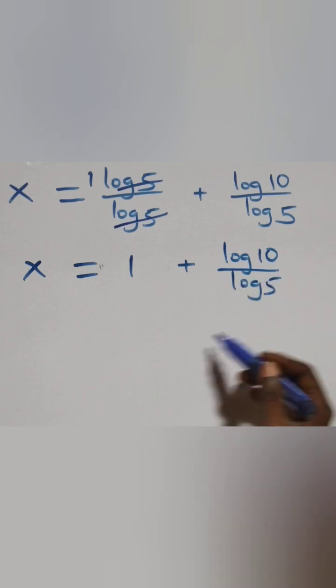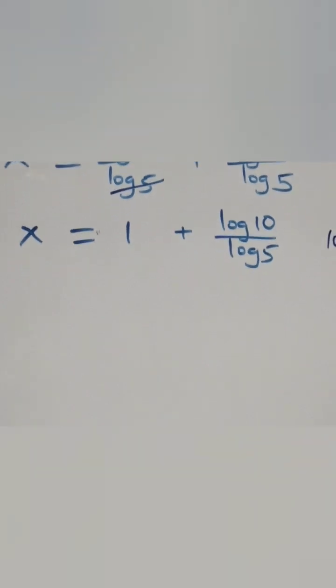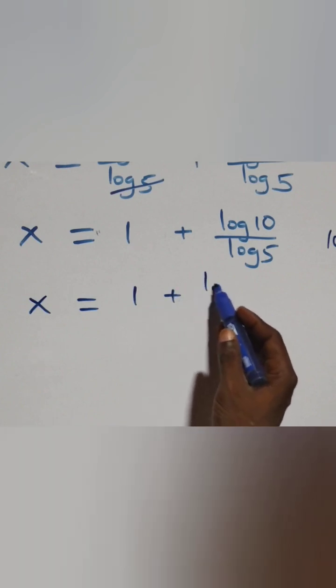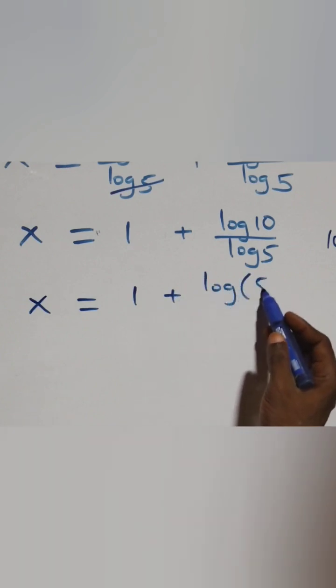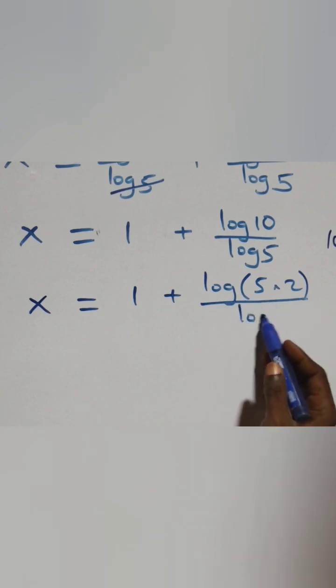That is, here we can express 10 as also 5 times 2, which implies we have x equals to 1 plus log 5 times 2 over log 5.